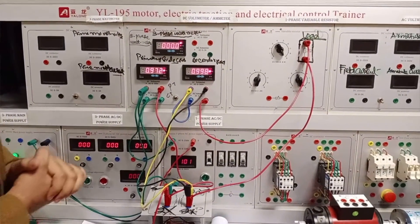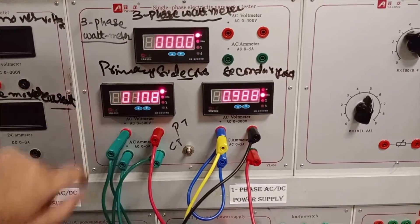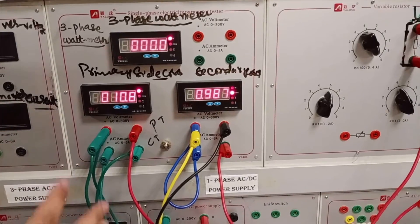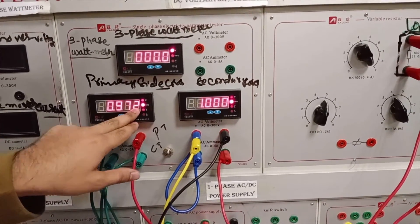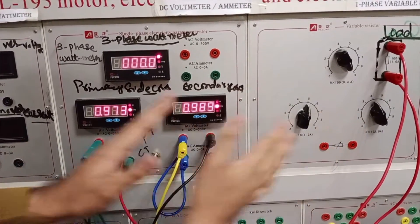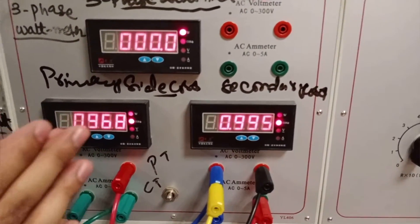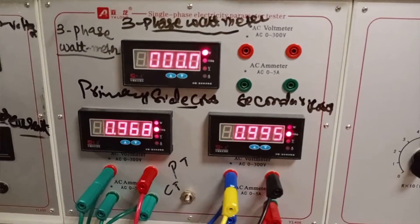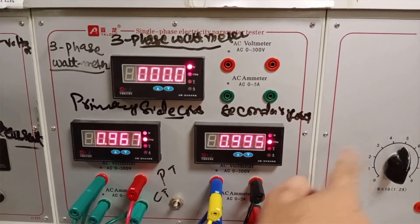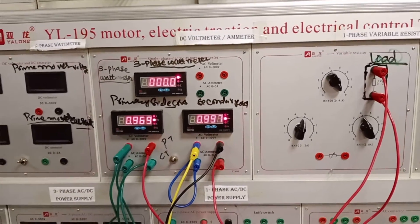Now you can see, dear viewers — this is the power drawn by the transformer from the primary side: 10.8 watts, almost 11 watts drawn from the supply. The power factor here on the secondary side is the unity one, and the primary side power factor is almost 0.973. This has been verified: from the secondary side with the resistive load connected, the power factor is close to unity, and the primary side power factor is 0.96 to 0.97.